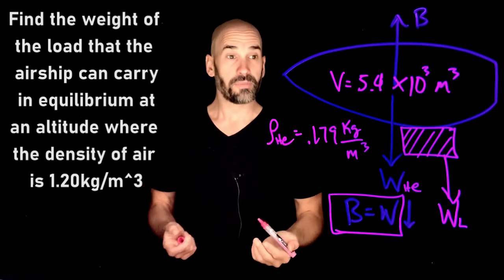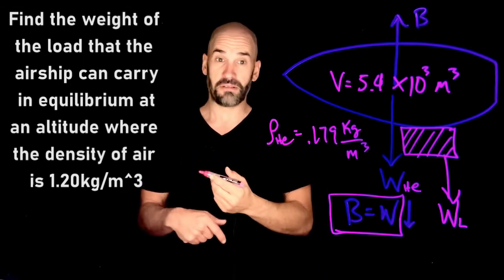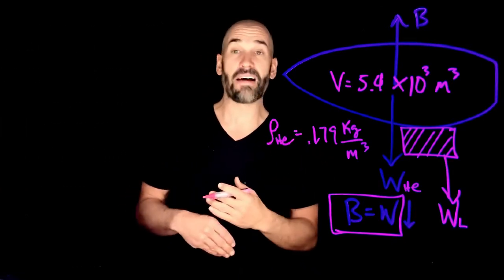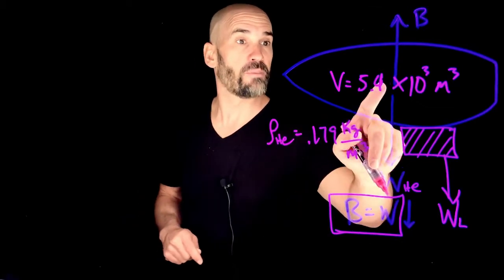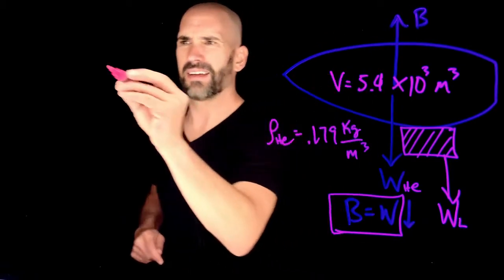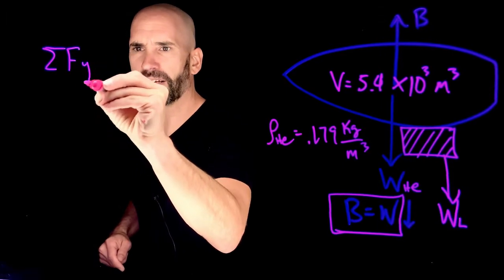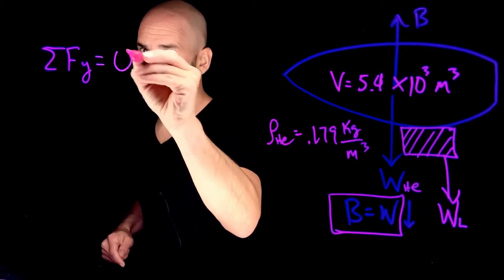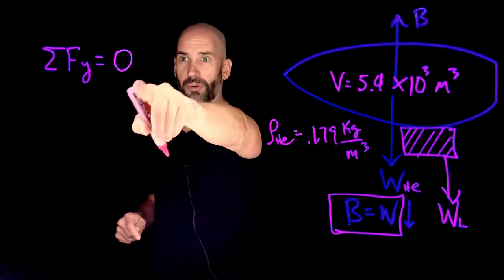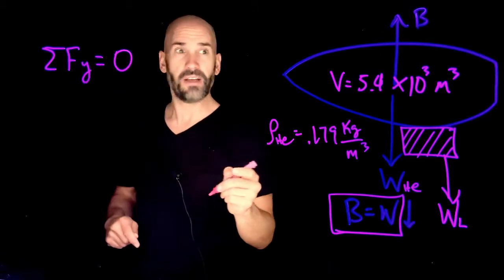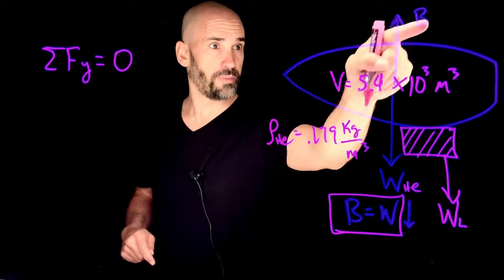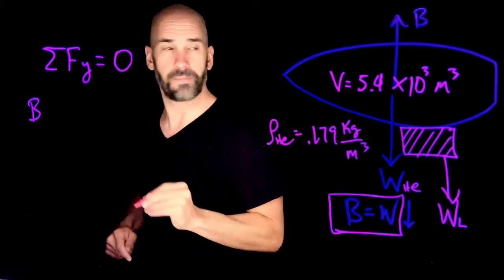So in order to solve this problem, we do what we always do. We look at forces and see how they balance. So if I want to be technically really correct, I want to say sum of forces in Y equals zero. That's equilibrium, that's balanced forces. So what force is going up? Well, my buoyancy force here, which is B.